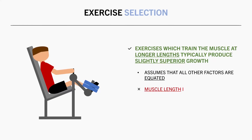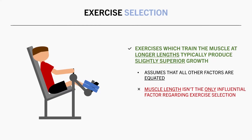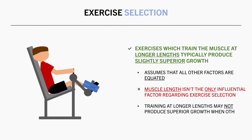So when all other factors are equated, an exercise which trains the target muscle at a longer length usually results in slightly superior growth. However, we should keep in mind that the length a muscle is trained at isn't the only factor determining hypertrophy outcomes — the exercise which trains the muscle at a longer length isn't always the one which results in the greatest muscle growth.